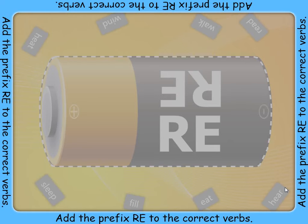Recharge the battery by adding re to the beginning of the verbs to see if it makes a new word. If it does, drag the verb into the center and make the battery glow with energy again.